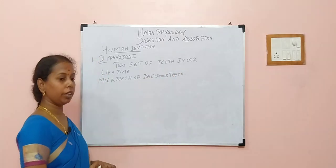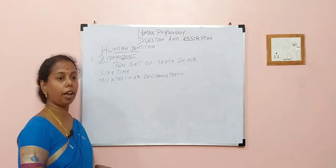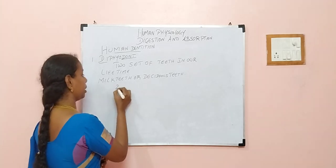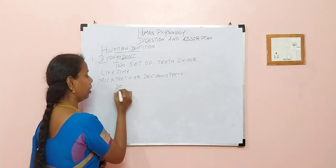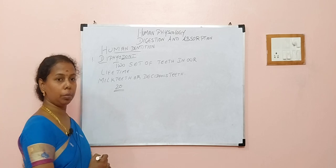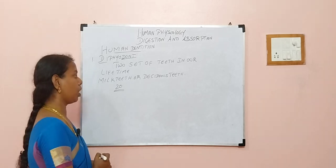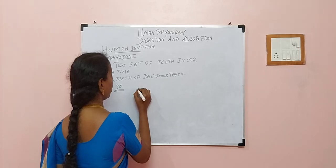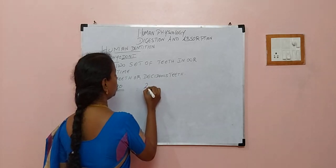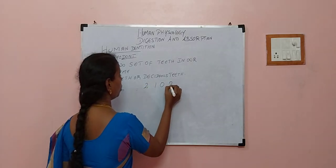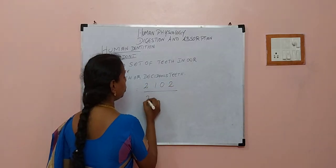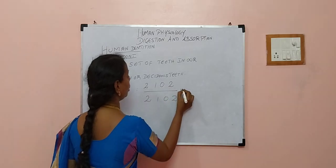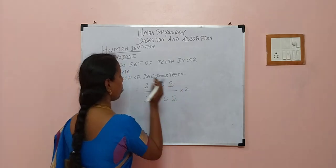Can you tell me, any of you, how many number of teeth we have in our baby time? Yes, very correct — it is 20. One possible question is the number. And they may even ask you the formula. The formula is 2, 1, 0, 2 divided by 2, 1, 0, 2 into 2.